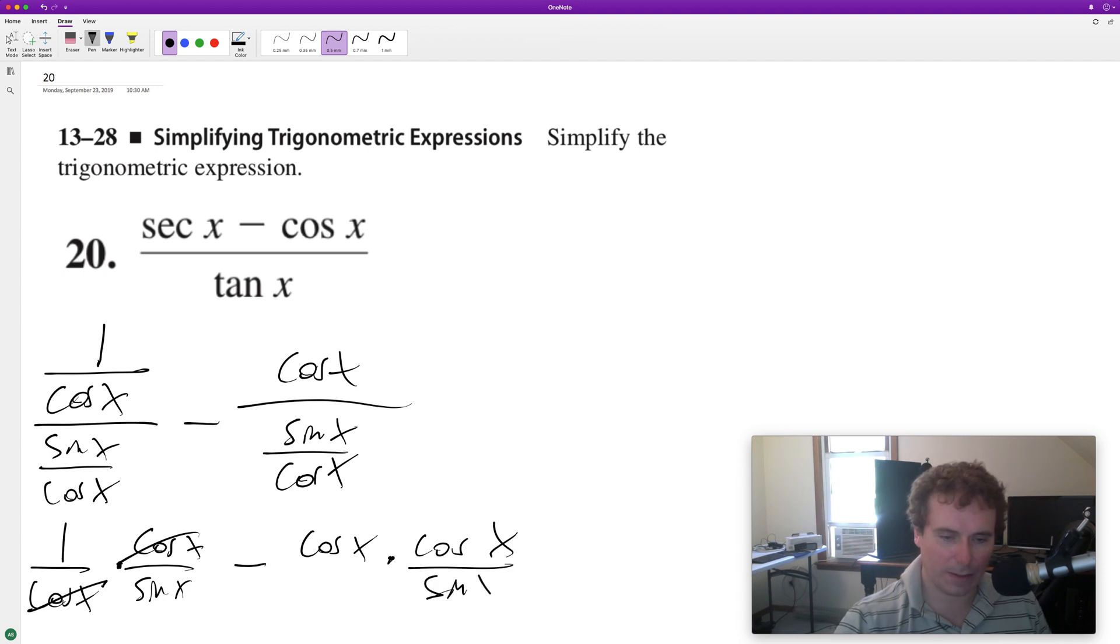Over sine of x, so we're simply left with one over sine of x minus cosine squared of x. Cosine times cosine over sine of x - they have a common denominator.